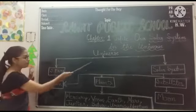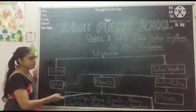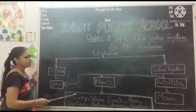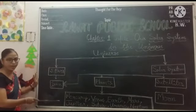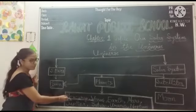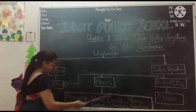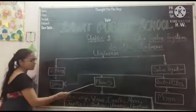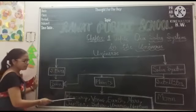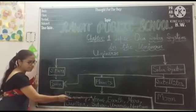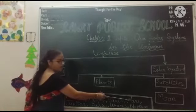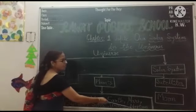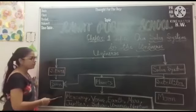Universe, Brahman, stars, sun, solar system, satellites, moon, planets. Students, you know how many planets there are? Eight planets: Mercury, Venus, Earth, Mars, Jupiter, Saturn, Uranus, Neptune. Again I am repeating, speak with me: Mercury, Venus, Earth, Mars, Jupiter, Saturn, Uranus, Neptune. There are eight planets.